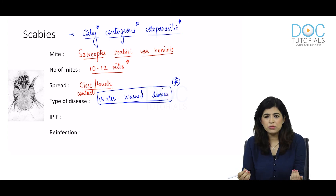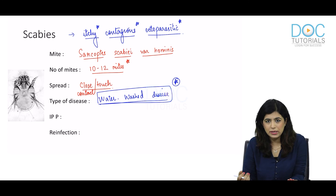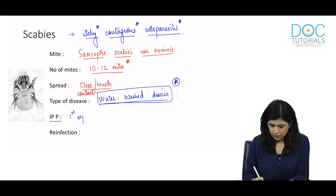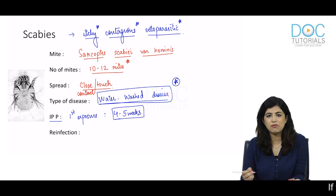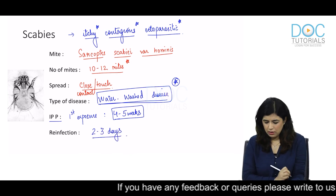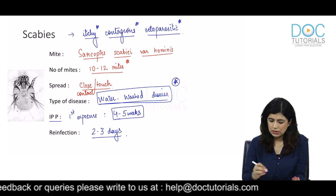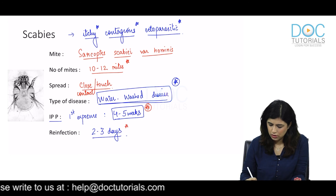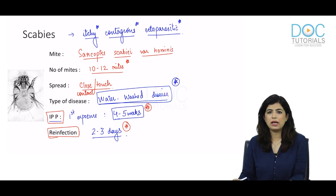The incubation period of scabies is divided based on first exposure and subsequent exposures. In the first exposure, the incubation period is 4 to 5 weeks. In reinfection — that is, subsequent exposures — it reduces to around 2 to 3 days. This is the most important question on this topic and is very frequently asked in exams with respect to scabies.